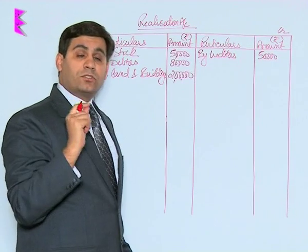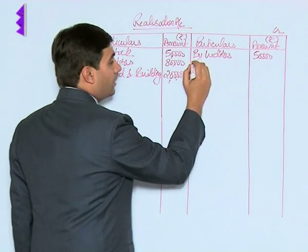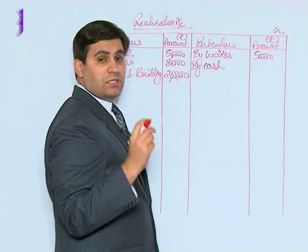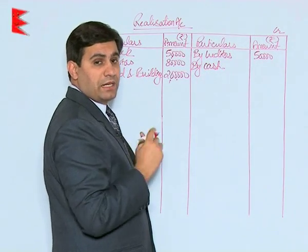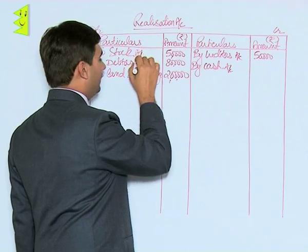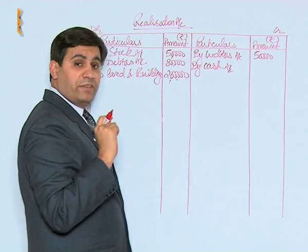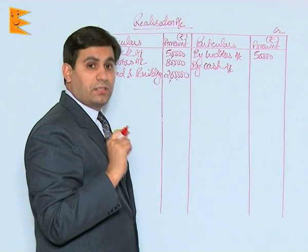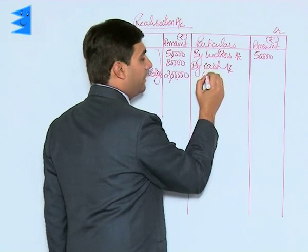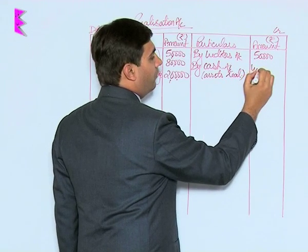The next step is to realize these assets and pay off these liabilities. The realization would be done through the cash account, since cash was appearing in the balance sheet. By cash account, a combined realized value of ₹4 lakh is recorded — these three assets together realized ₹4 lakh, written as 'assets realized ₹4 lakh.'